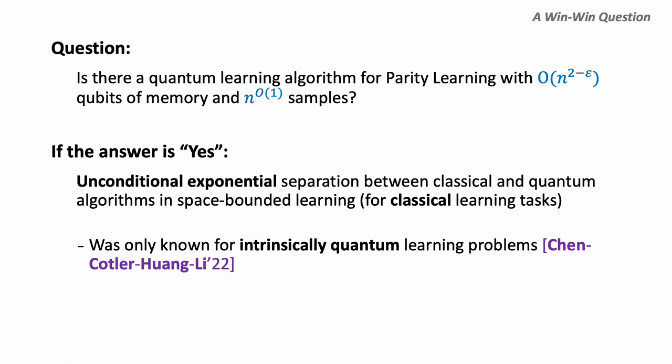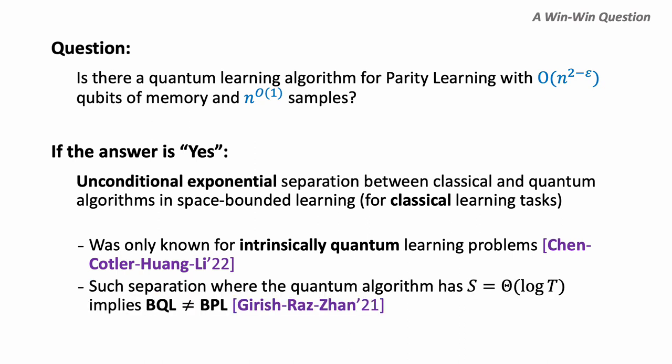On the other hand, we have evidence that parity learning can be the yes case. If we could prove such a separation in the regime where the quantum learning algorithm has space logarithmic in time — which is not the case for parity learning — then it would actually imply a much stronger separation for decision problems: that BQL, the quantum log space, is not equal to BPL, the classical log space. As parity learning does not fall into this category, there is still hope to prove such separation for parity learning.